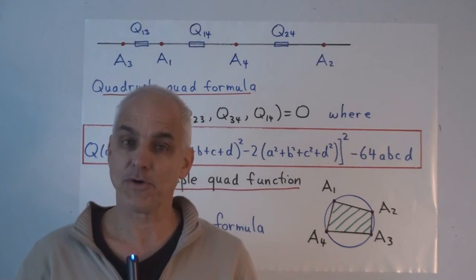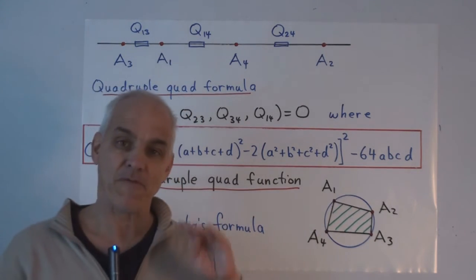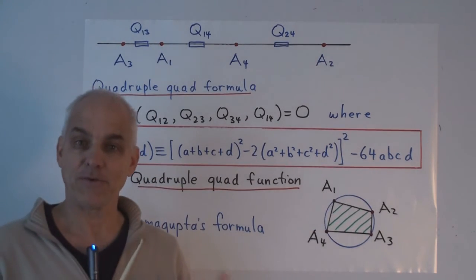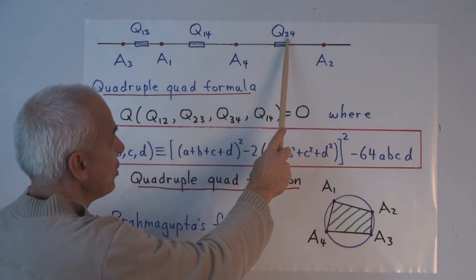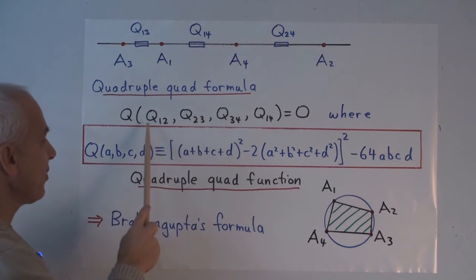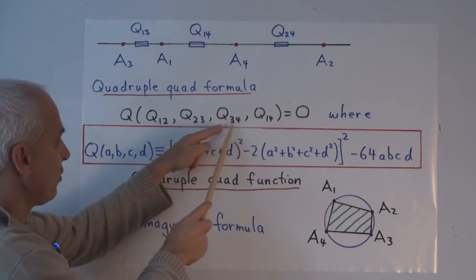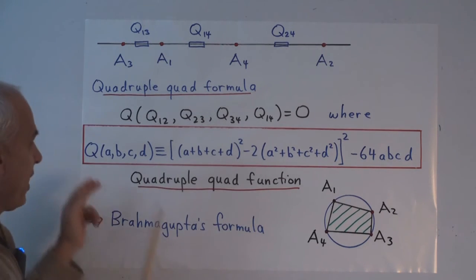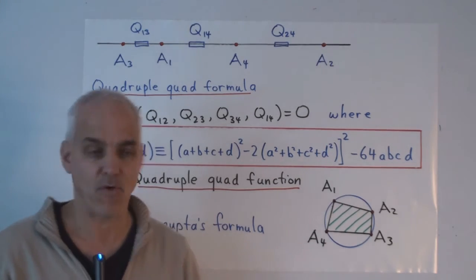The triple quad formula concerned three points on a line. There's also a corresponding formula for four points which are collinear. There's four points and they make all together six quadrants. So, for example, we'll say that the quadrants between these two is Q24. And there's a relation between four of these six quadrants. So, Q12, Q23, Q34 and Q14 are satisfying this relation equals zero. This is the quadruple quad function which generalizes and extends the triple quad formula.